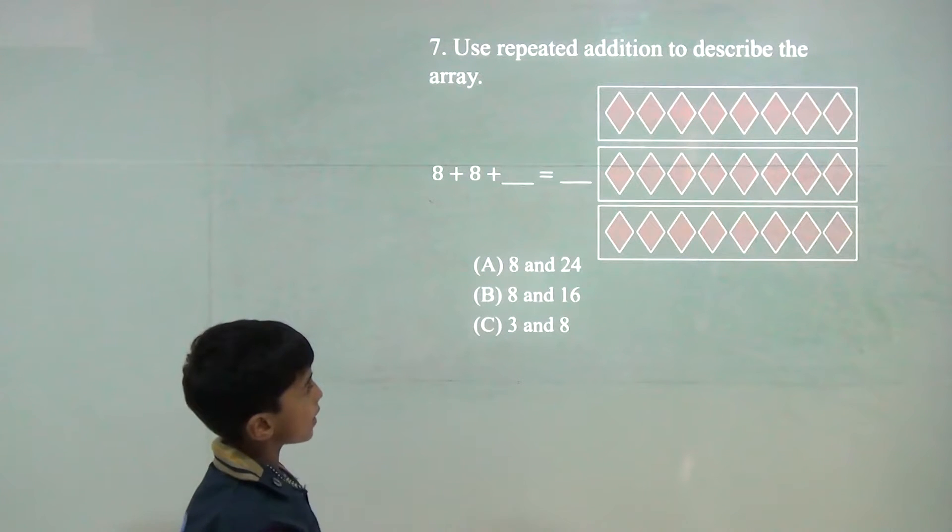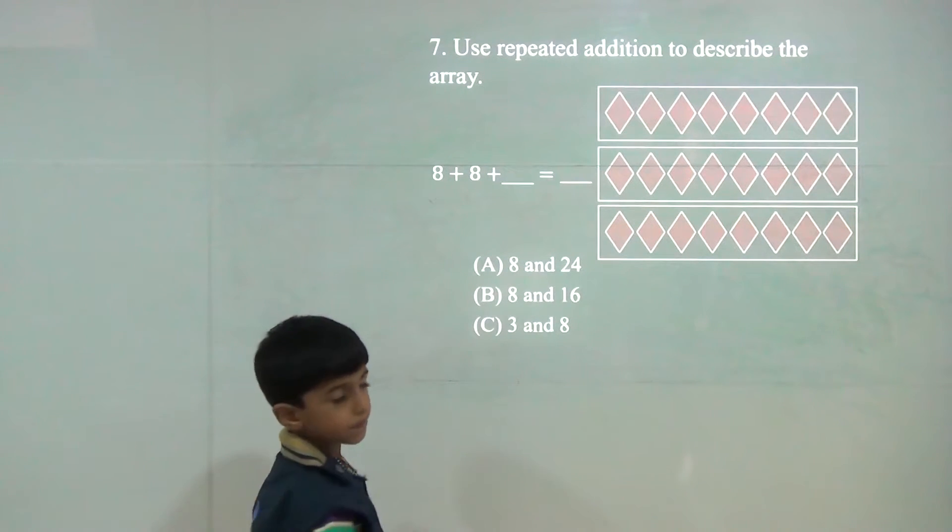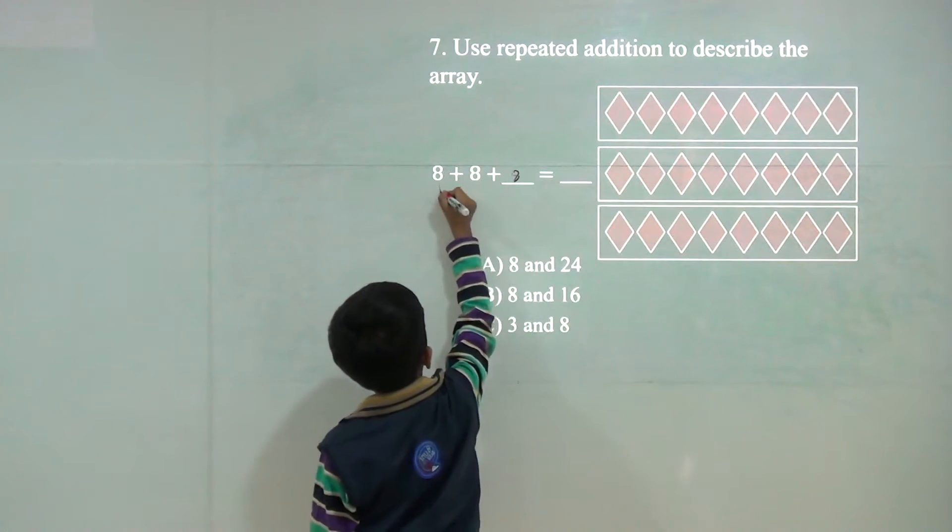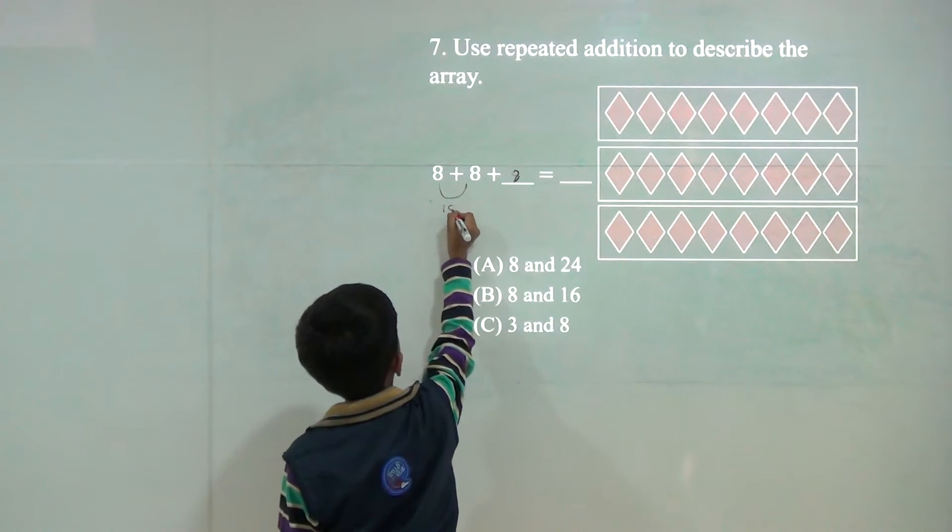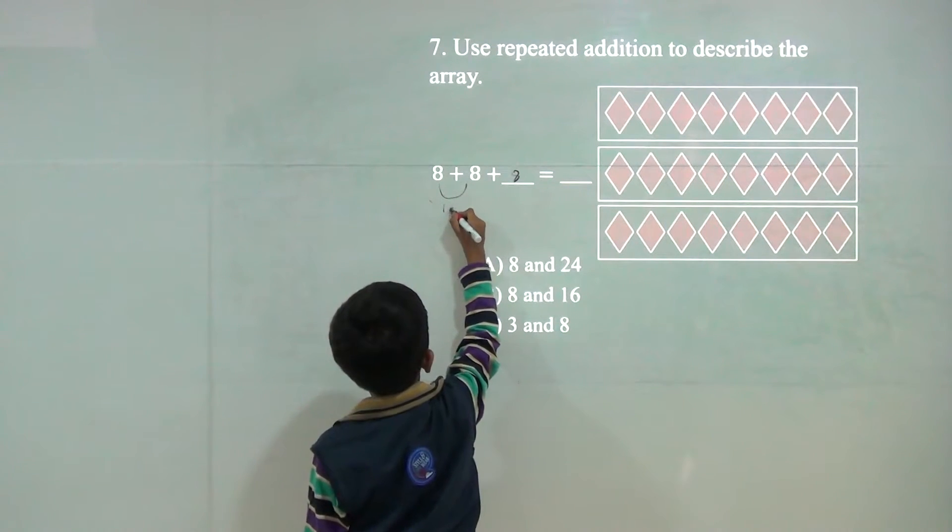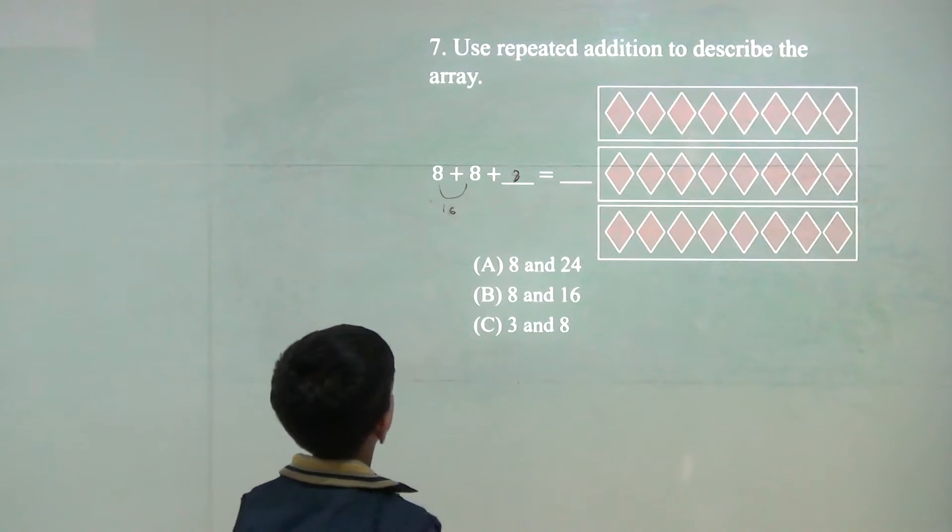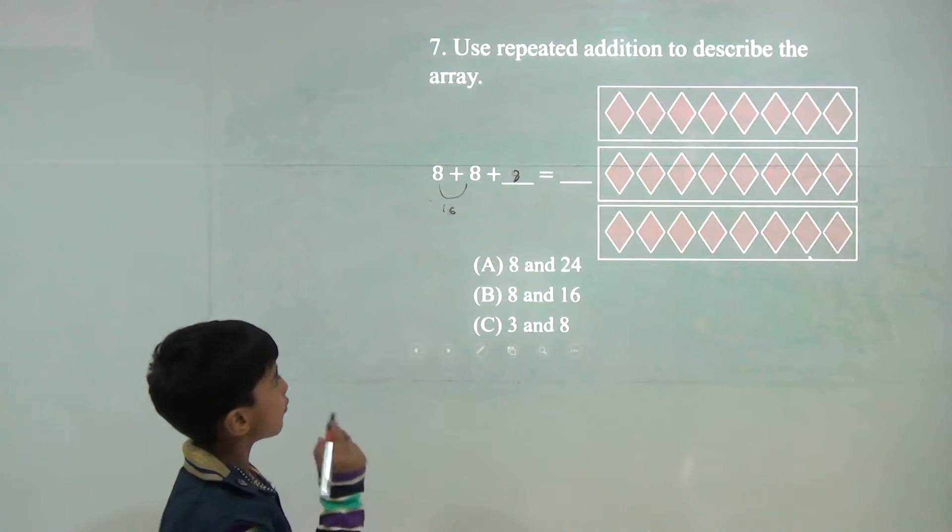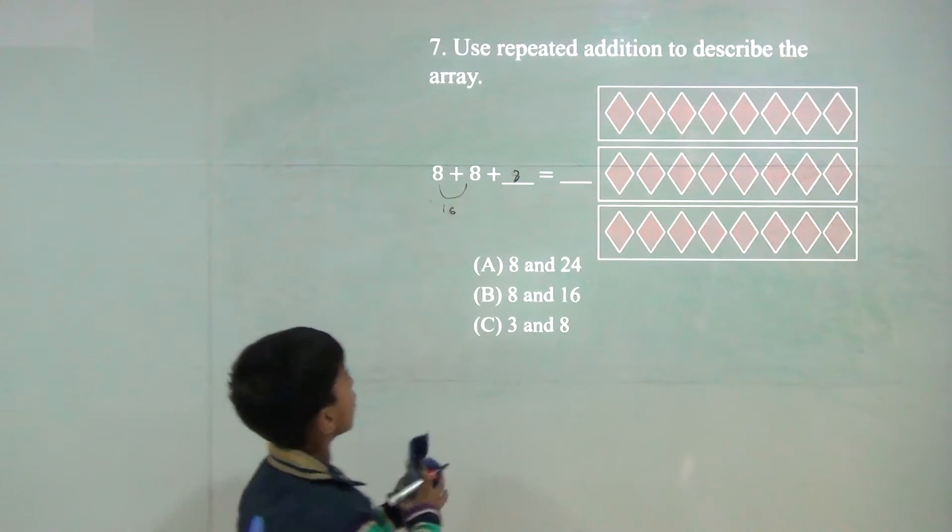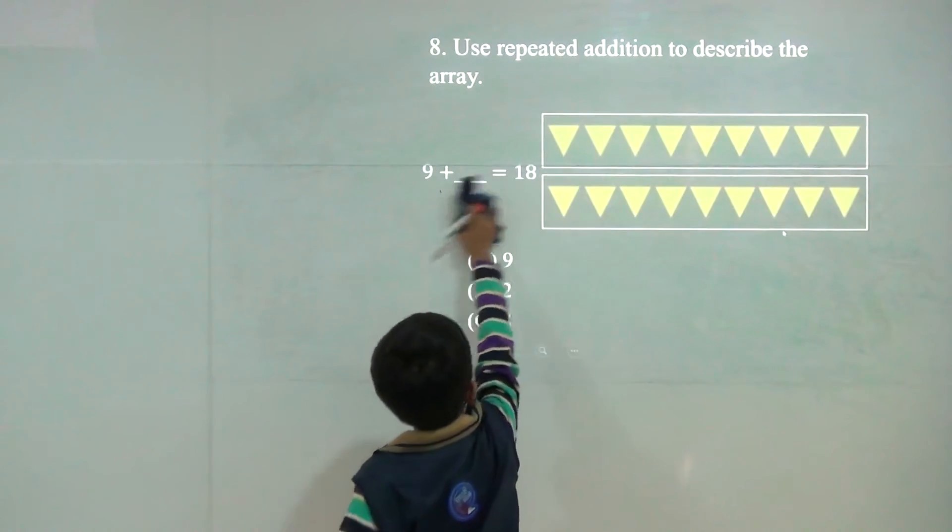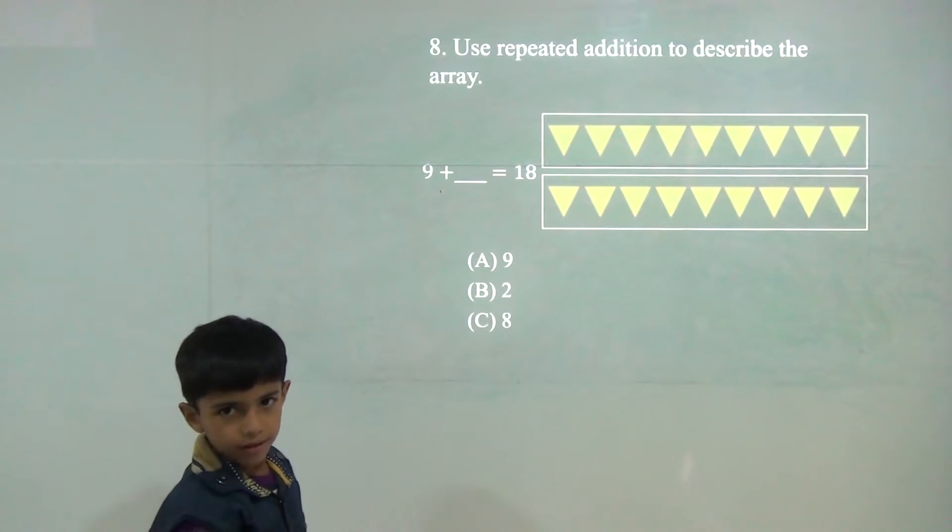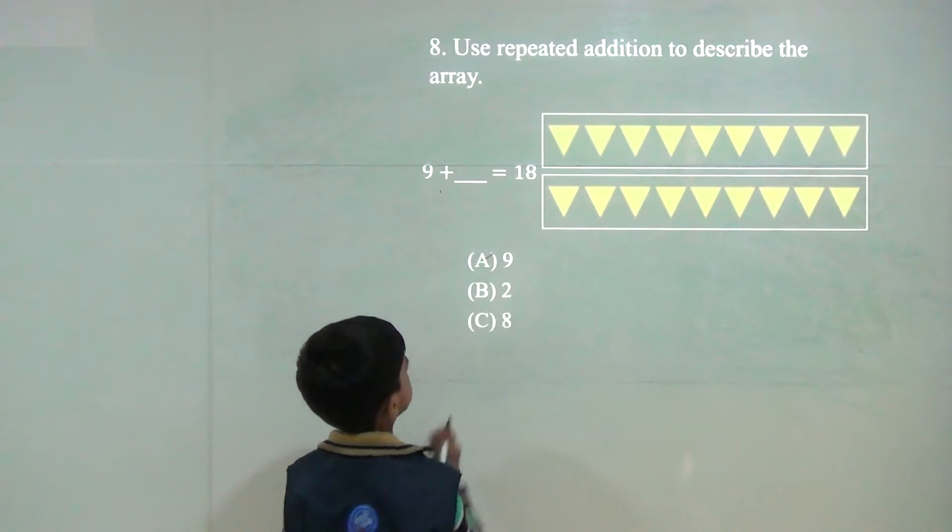8 and 24. Because here it will become 8 and 8 it would be 16. Now 9 plus 9. So answer would be 8.